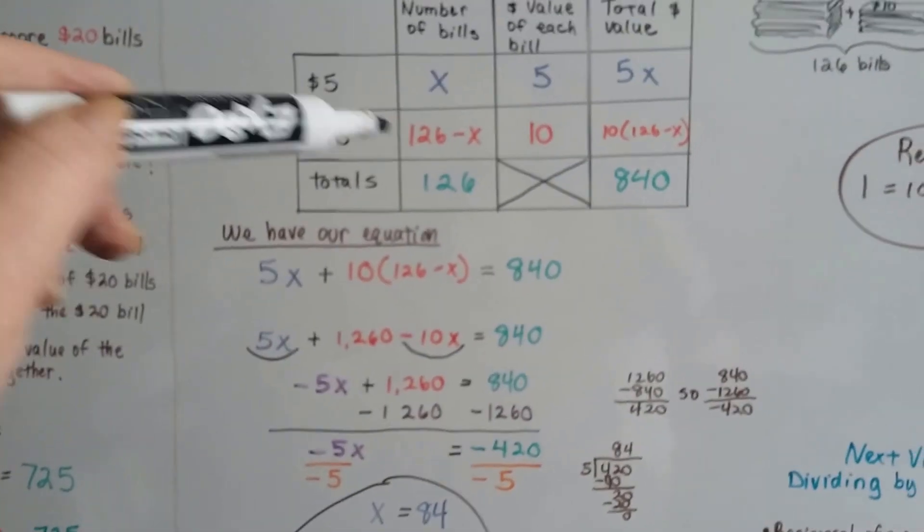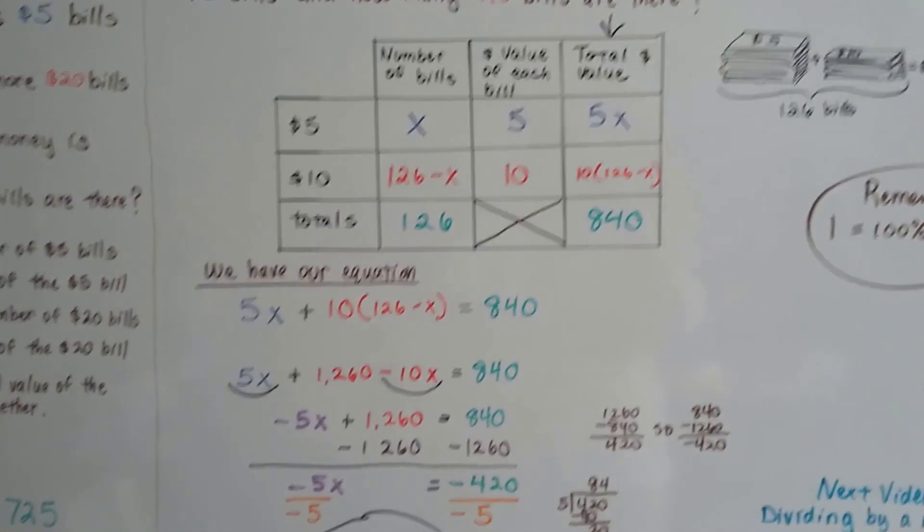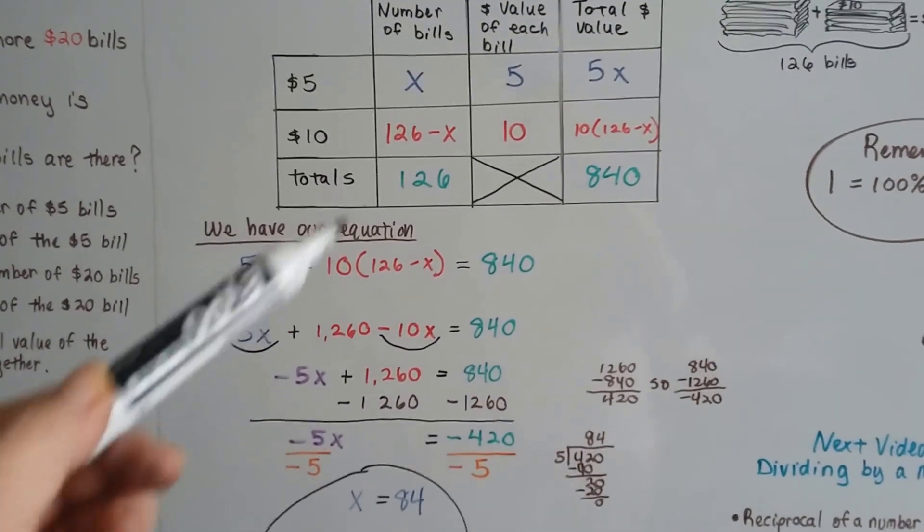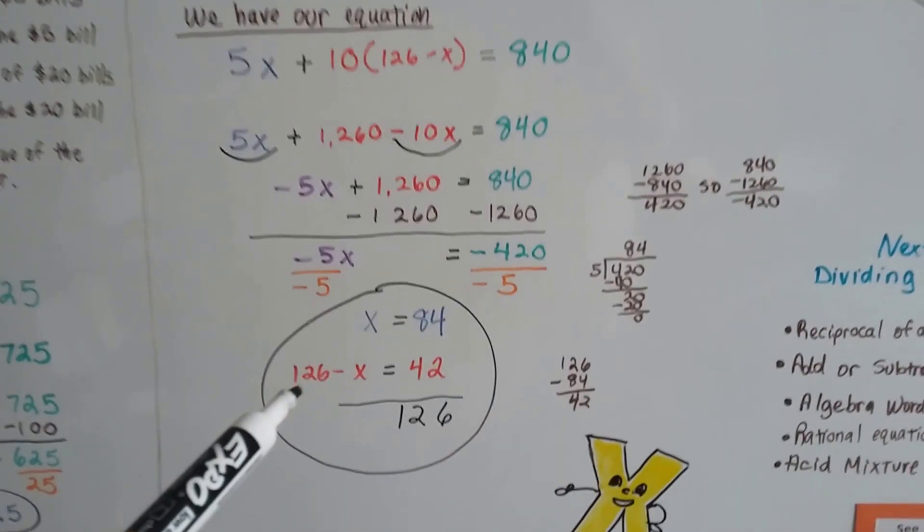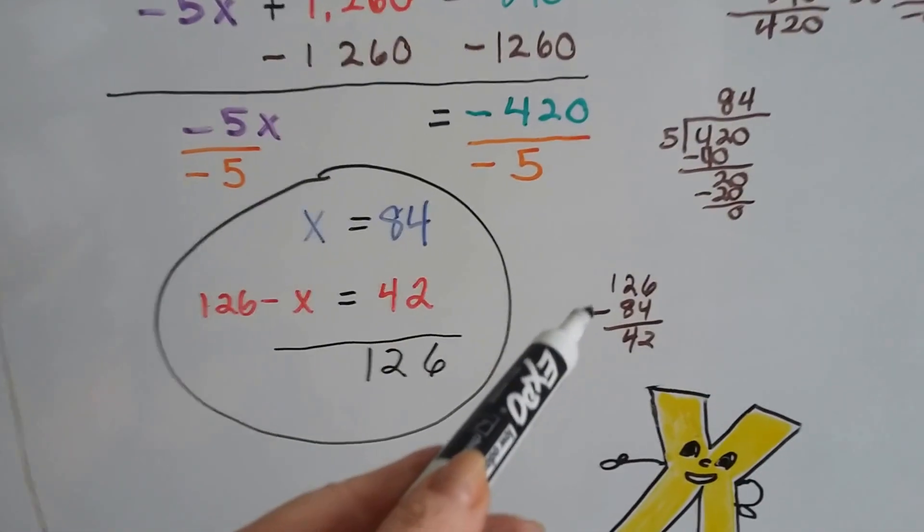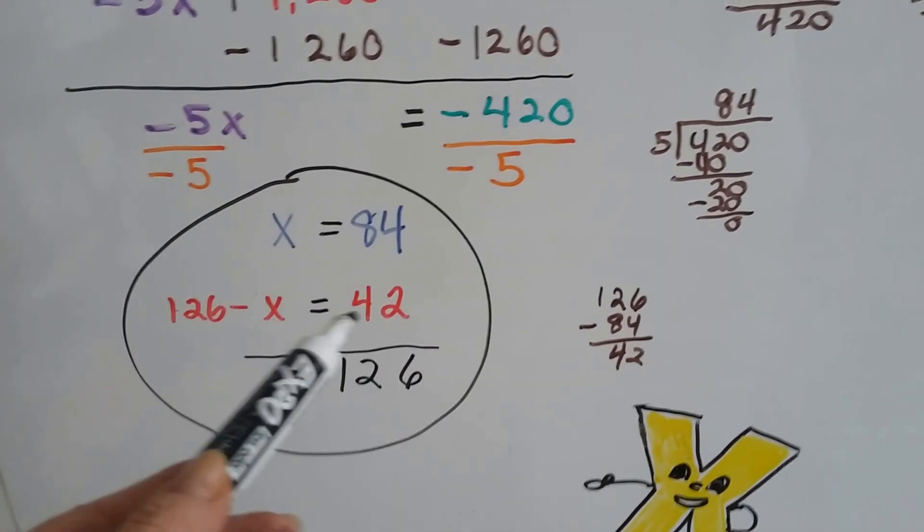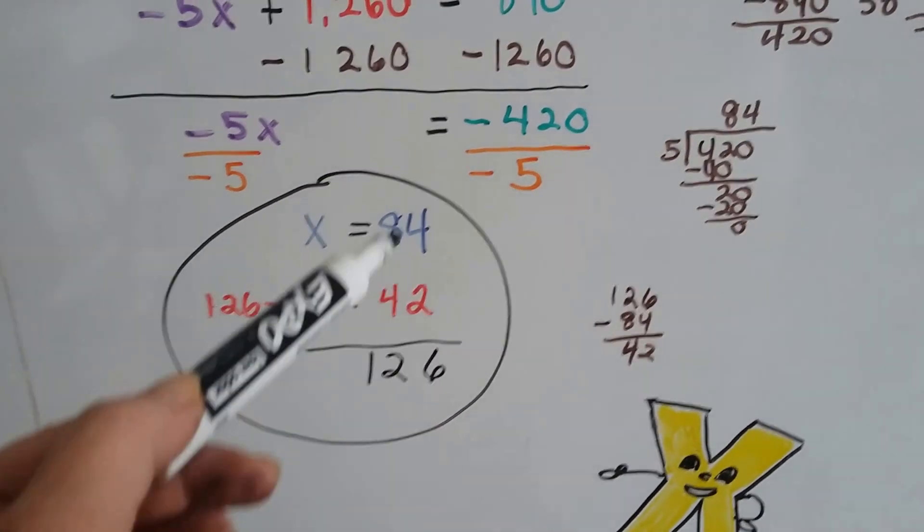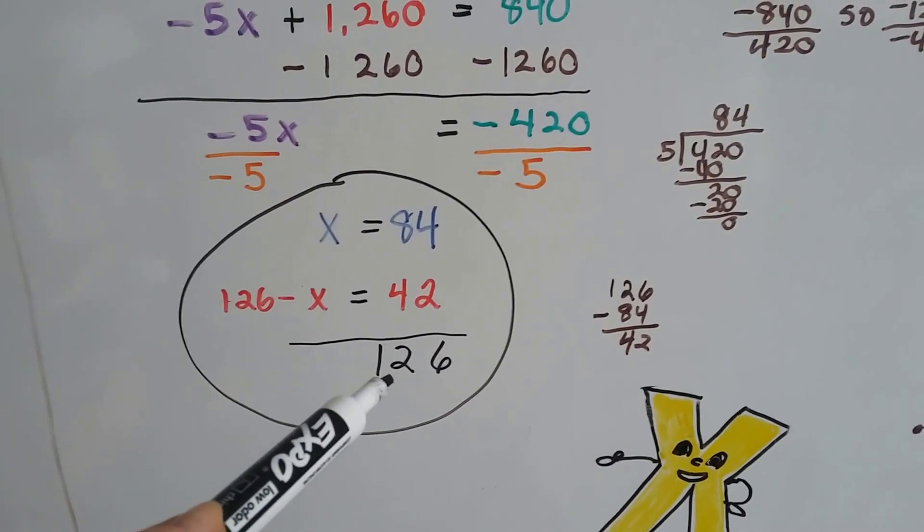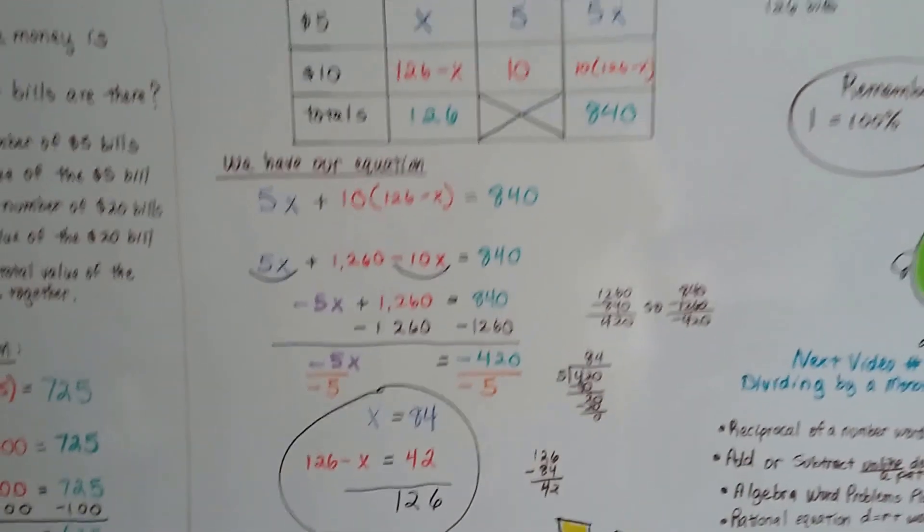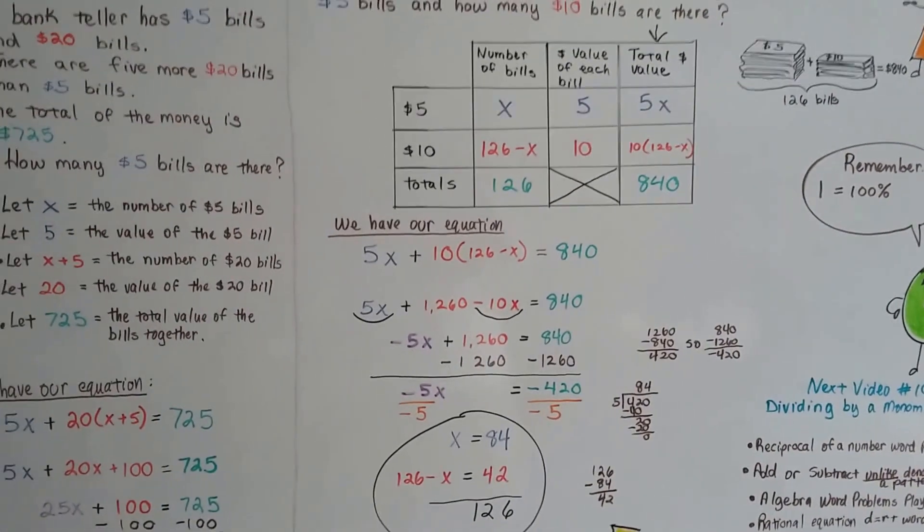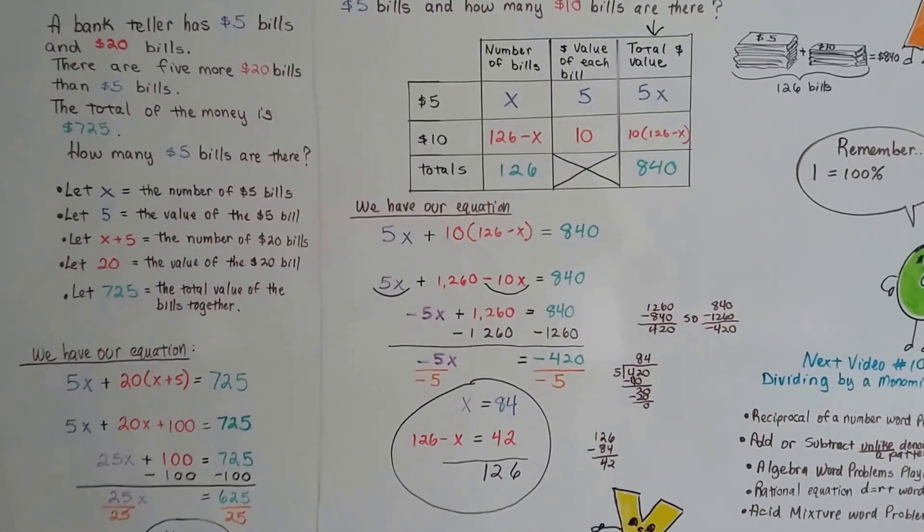To find out how many $10 bills, because remember we need to find both. To find out how many $10 bills, we just take the 126 and take away the 84. 126 minus 84 is 42. We know there's 42 $20 bills. And 84 plus 42 is 126. And we've got our answer. That wasn't too bad, was it? I think you can do this.